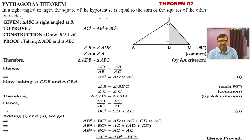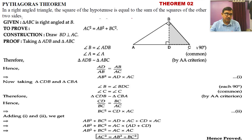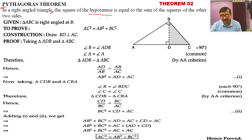The next theorem is the Pythagoras theorem — very important, and questions are definitely based on it. The statement every student must learn is: In a right-angled triangle, the square of the hypotenuse is equal to the sum of the squares of the other two sides. Given: triangle ABC, right angle at B.